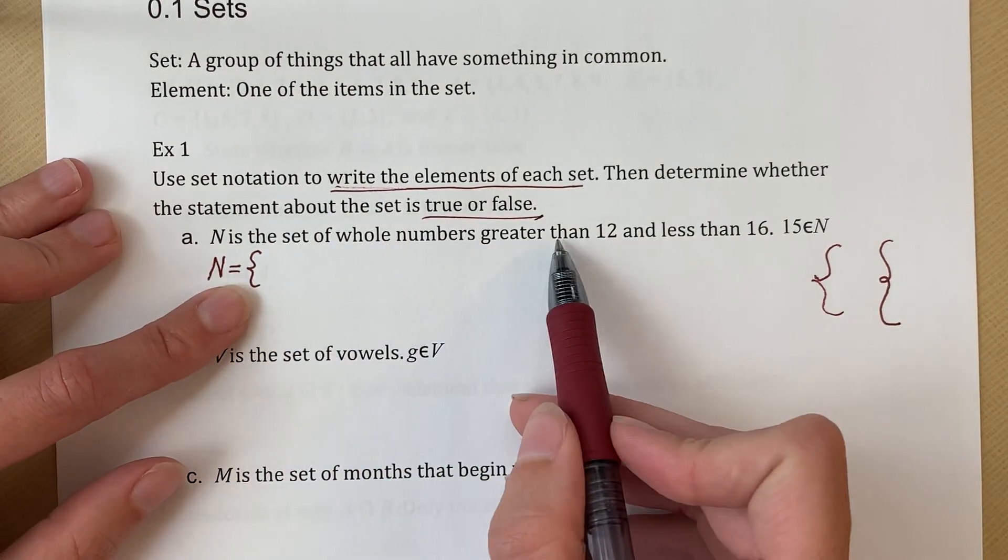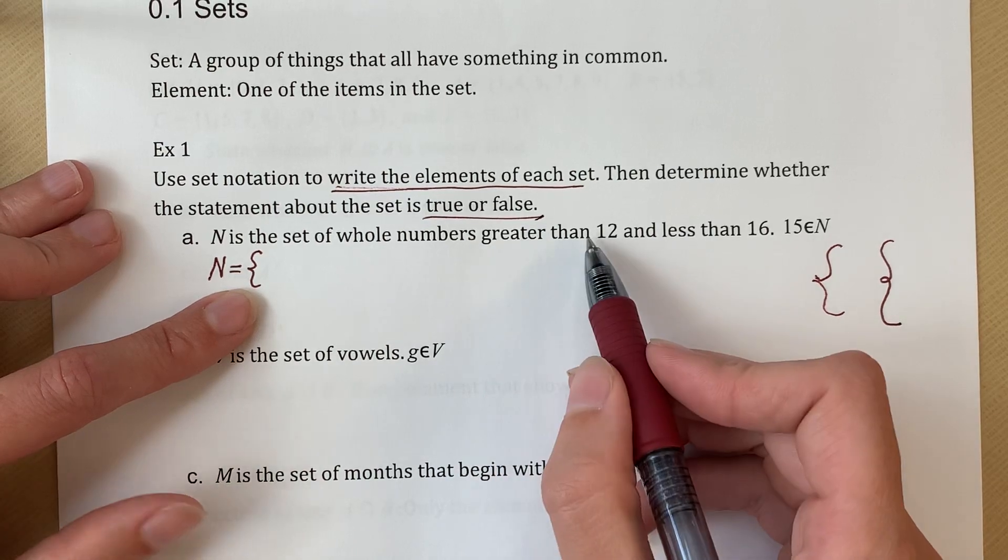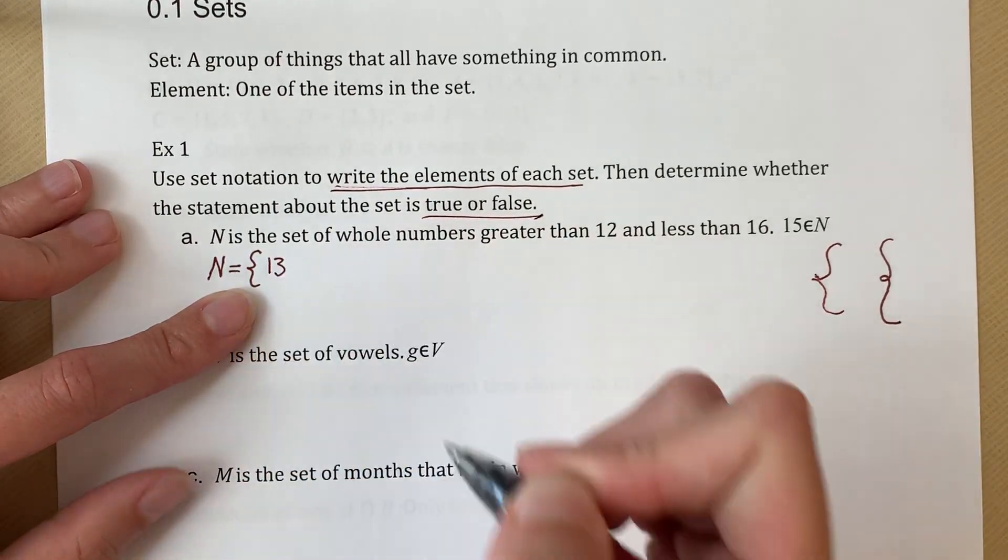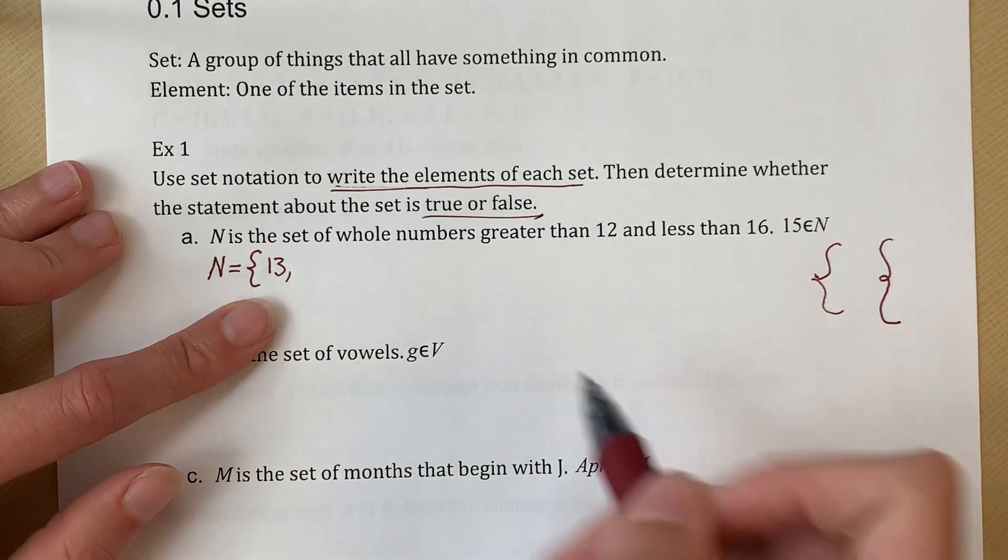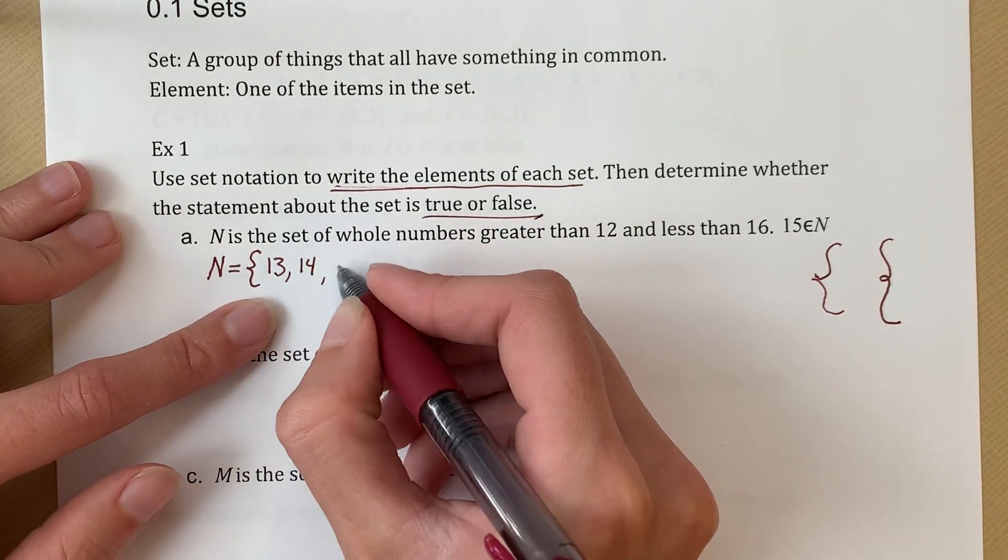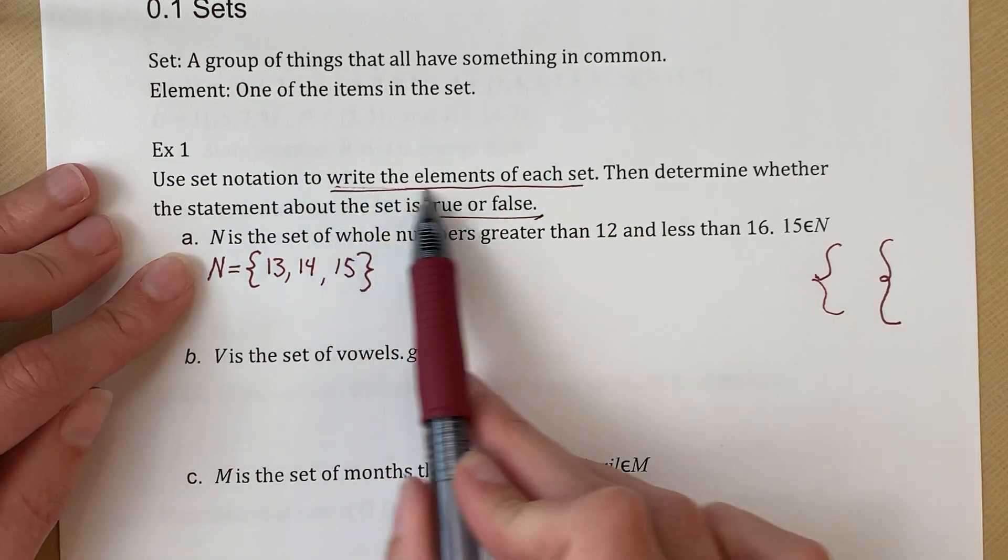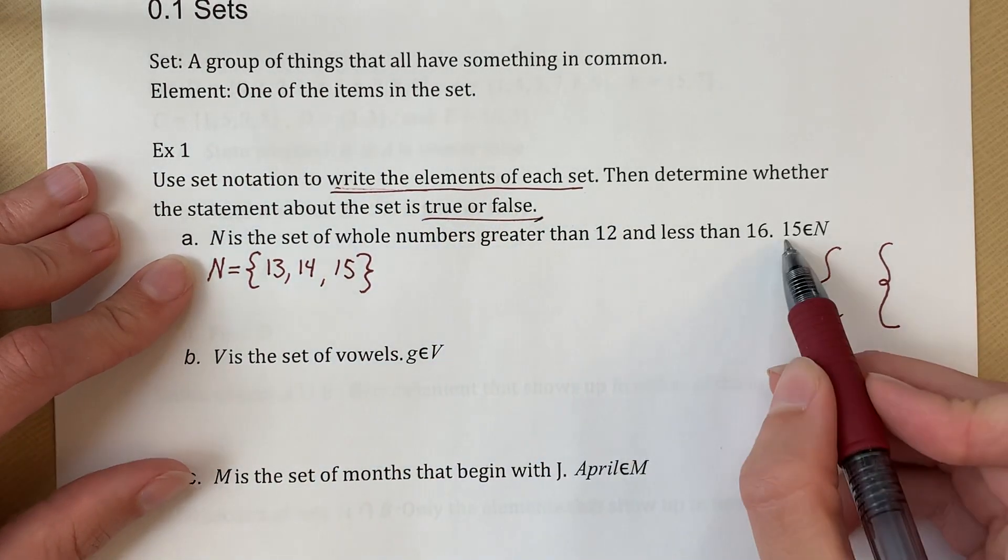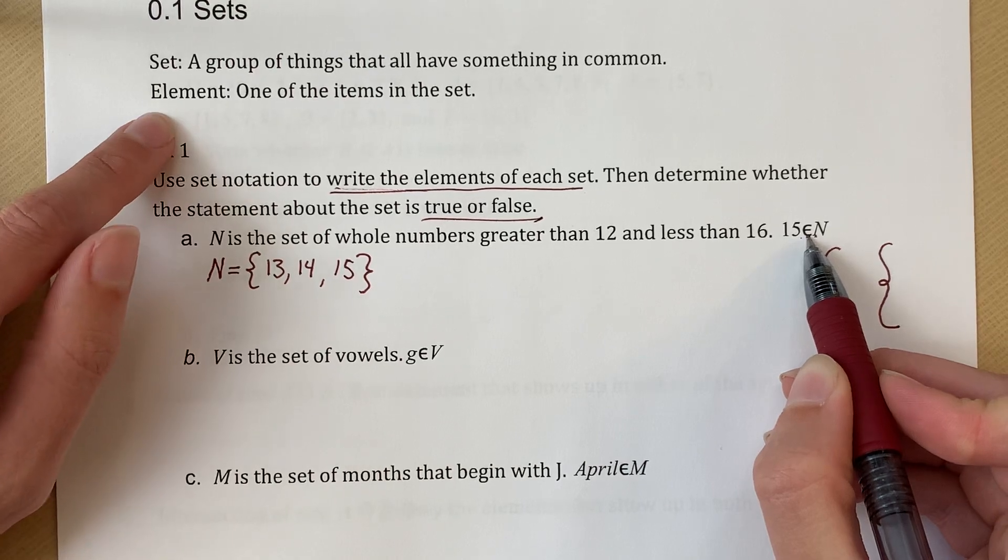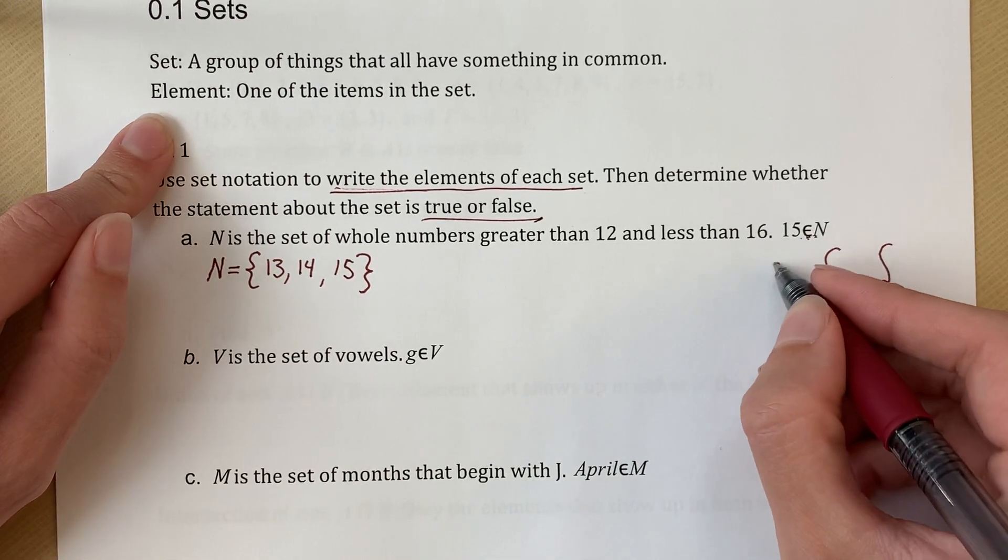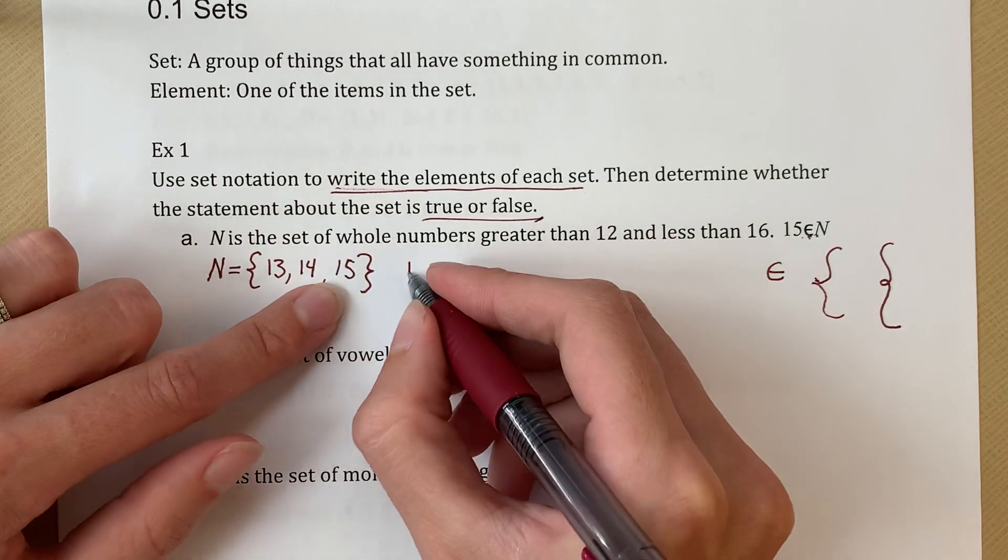So back to this, N is the set of whole numbers greater than 12 and less than 16. So this is greater than 12, not greater than or equal to. So that means 13 is the first one. 13 is greater than 12. And we want every whole number greater than 12 and less than 16. So 13, 14, and 15. And then we end our set. So that is our set. We've done the first part, write the elements of each set. And then we need to write if it is true or false. So this says 15 is an element of N. This is our element symbol. Instead of writing the word element every time, we can just write this weird looking E. It's kind of like a C with a line in it. So 15 is element of N. Yep, 15 shows up here. So this is true.